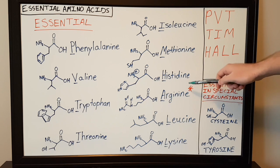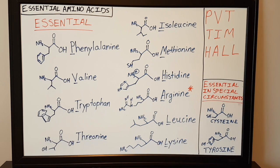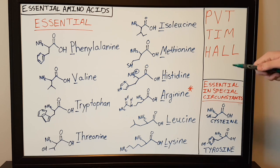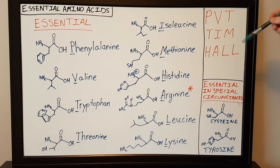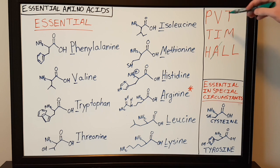As mentioned, there's an asterisk on arginine. Arginine is not always an essential amino acid — by definition, it's only essential during childhood in growing children, but not in a full-grown adult. So it's sometimes lumped in with the essential amino acids, but not always. You can remove the A for arginine from the mnemonic, leaving 'PVT TIM HLL,' but in some cases arginine is actually essential.